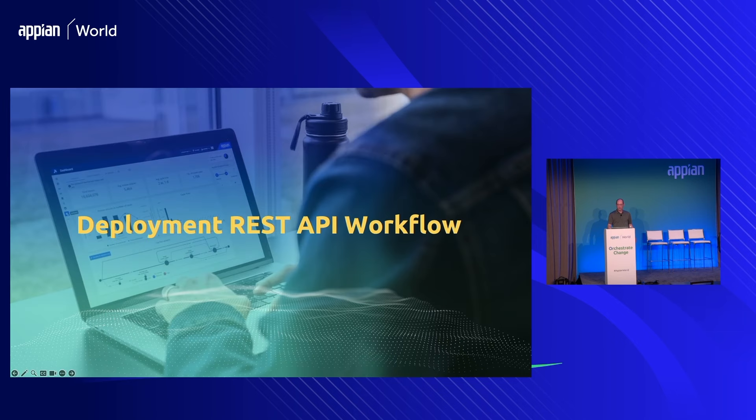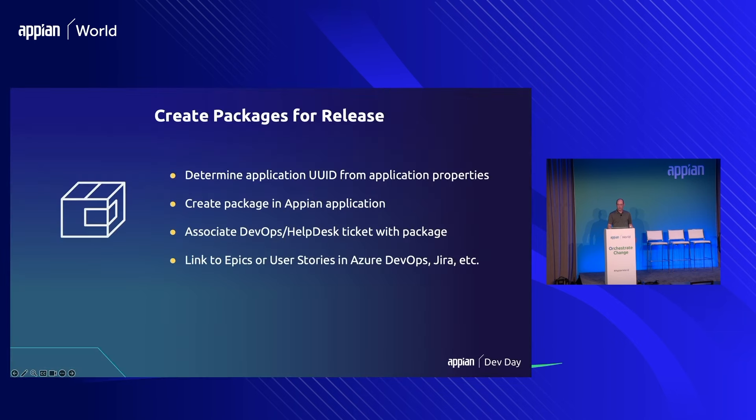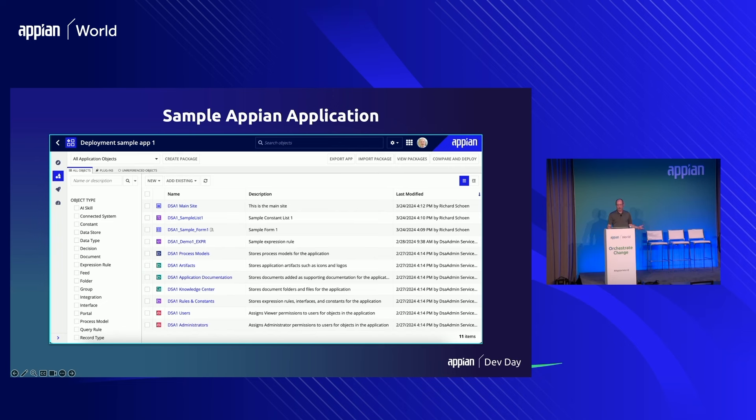The first step is generally to create a package — either for an application or a set of objects you want to deploy — and you need to know its unique ID. When creating a package, you can associate it with an Azure DevOps story, a Jira ticket, or some other environment. In Appian Designer, you can see a list of all objects and create or deploy a package for your entire application. To display the application UUID, go to the toolbar icon, select application properties, and then determine the application ID for which you want to deploy.